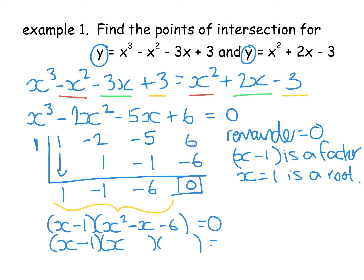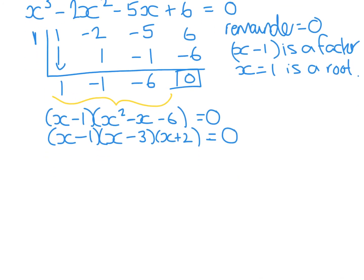Two numbers multiply to 6 and add to -1. It's going to be a 3 and a 2. And -3 + 2. Let's move that up. So from there we solve each of those = 0. So you get x = 1, x = 3, and x = -2. So we have the first part of all our coordinates. We now need to get the y-coordinates.